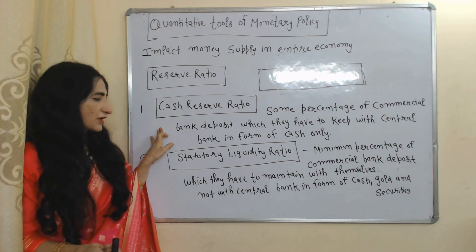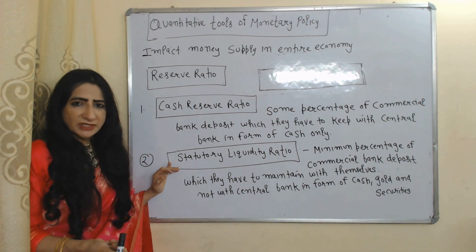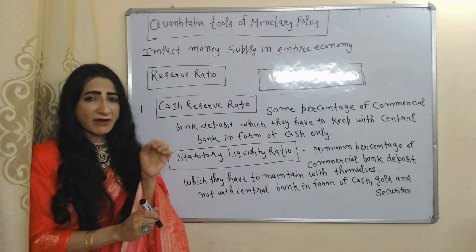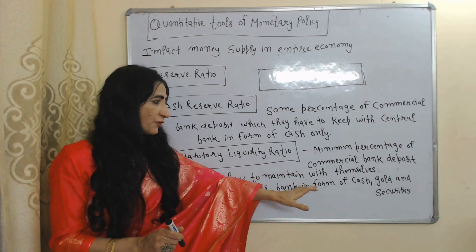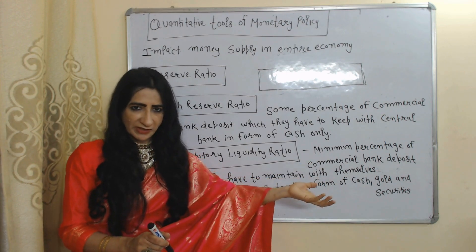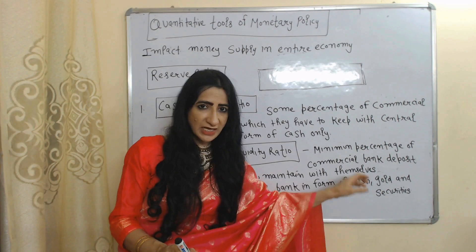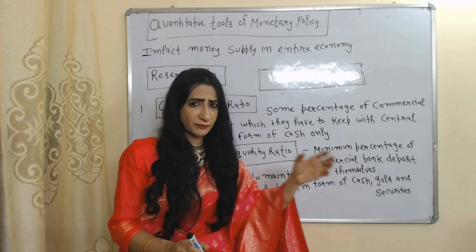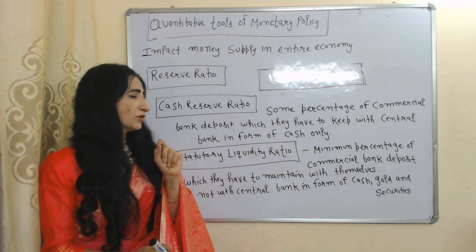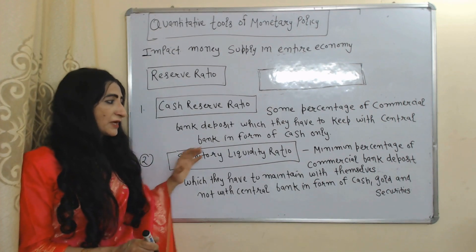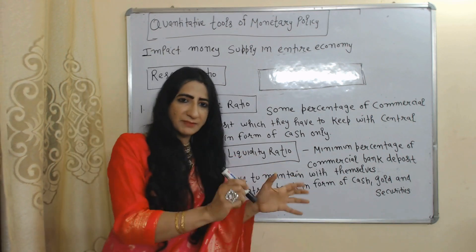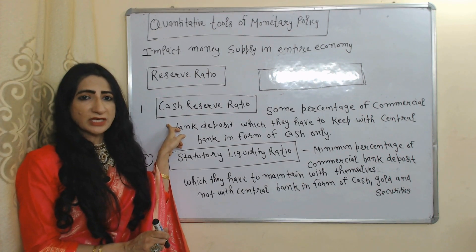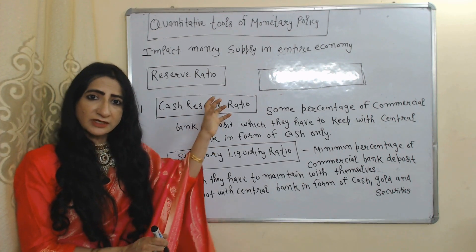Statutory Liquidity Ratio means the minimum percentage of commercial bank deposits which they have to maintain with themselves in the form of cash, gold, and securities. They cannot use this cash, gold, and securities for credit purposes. One important difference: in the case of SLR, commercial banks maintain it with themselves, but in the case of CRR, commercial banks have to keep some cash with the central bank.